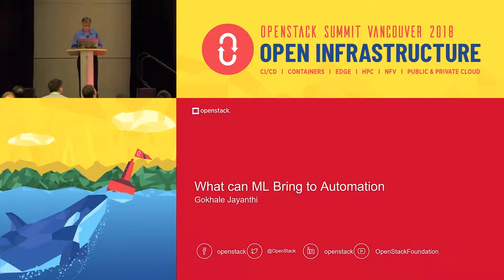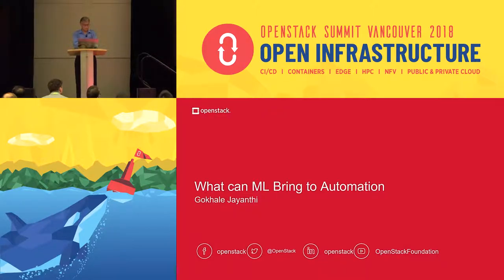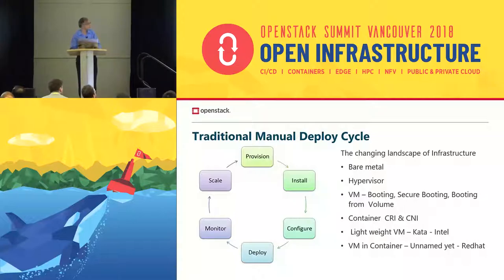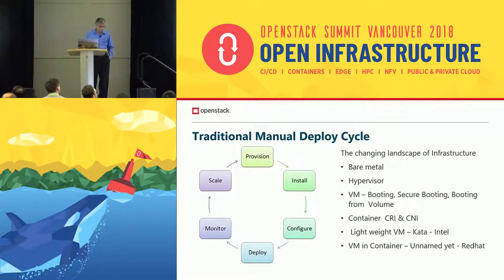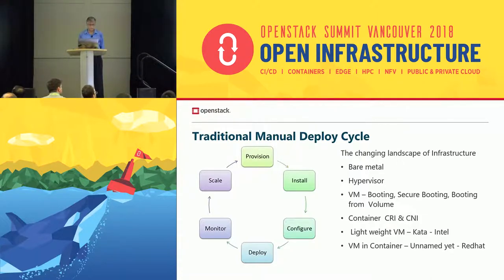Thanks Prakash, you have set up the context well and made my job easy. I shall present aspects of machine learning and automation — specifically, automation of provisioning of infrastructures in an intelligent manner. The traditional manual deployment cycle starts with provisioning resources, installing the needed components, configuring them, and deploying on the physical infrastructure. Following this, we monitor behavior and, if needed, scale resources to suit demand. Then we cycle all over again.